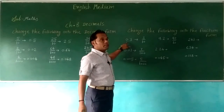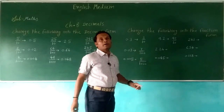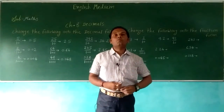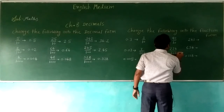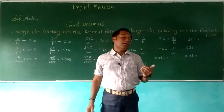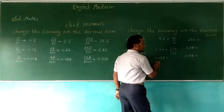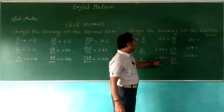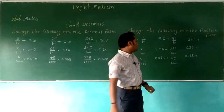You can see: 0.3 is 3 by 10, 0.07 is 7 by 100, 0.005 is 5 by 1000, 9.2 is 92 by 10. 2.24: point then 2 digits, so 224 by 100. 0.045: point then 3 digits — 1, 2, and 3 — so 45 by 1000.